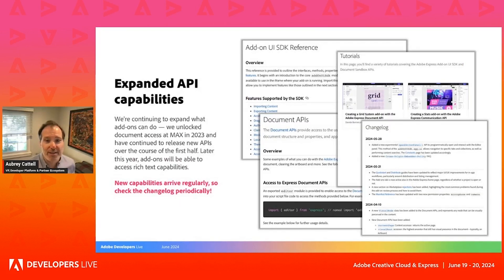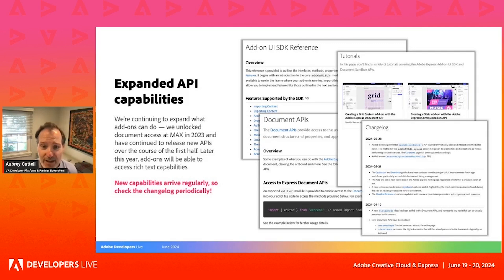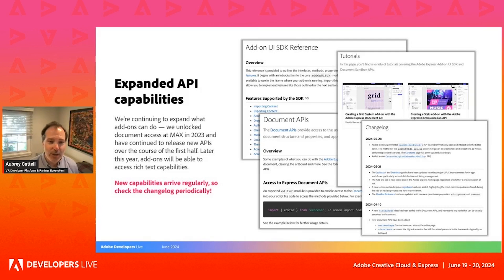I also want to talk about some of the expanded API capabilities. Document APIs were just the first set of powerful APIs. We have more in the pipeline that we've been working on — things like accessing rich text capabilities to do text styling, or accessing fonts. We have sessions coming up later today to explain what we've brought to market and what we have planned that expands the possibilities of what you can build with Express.